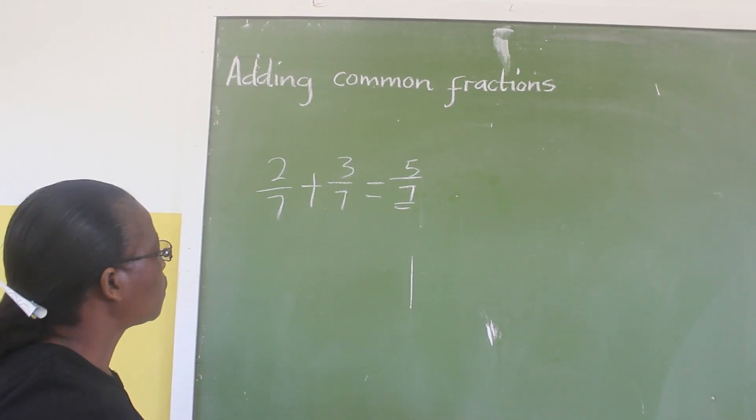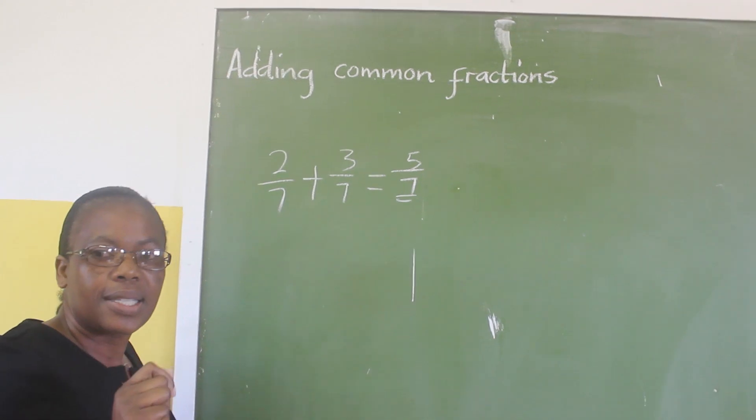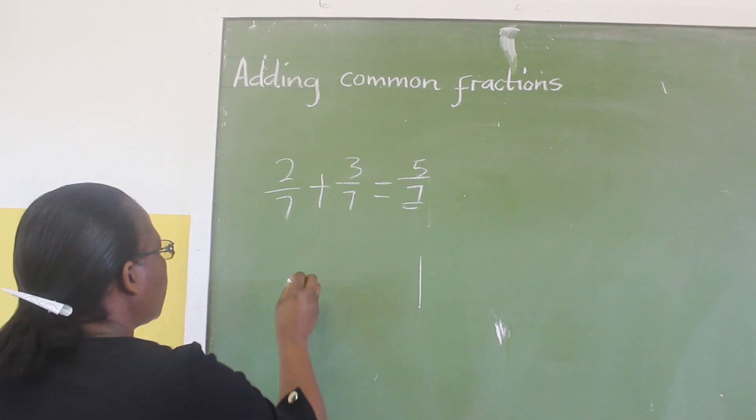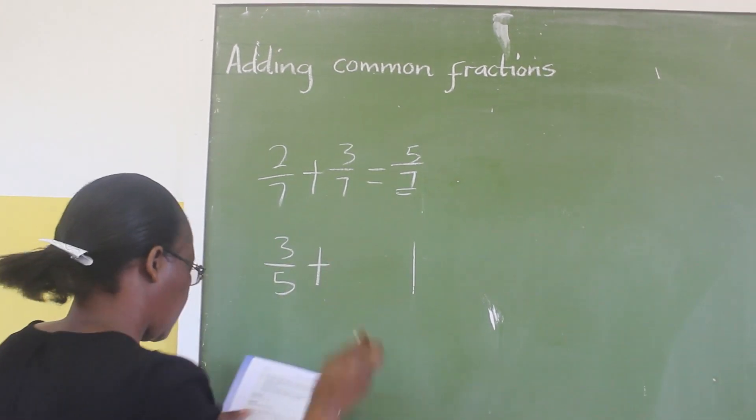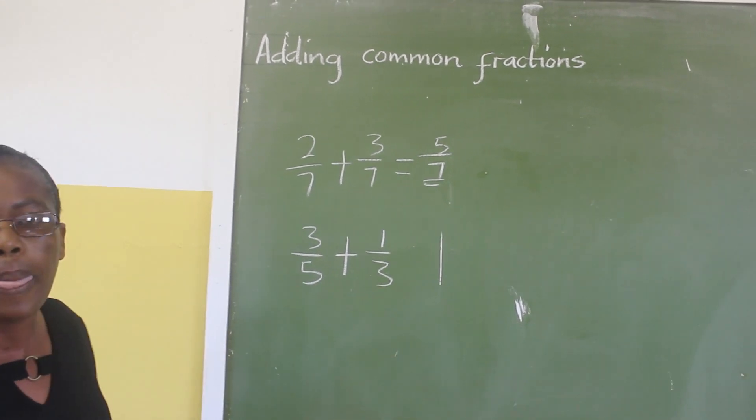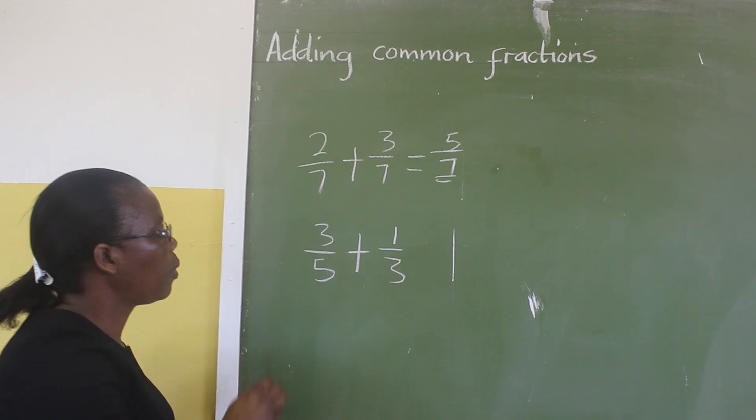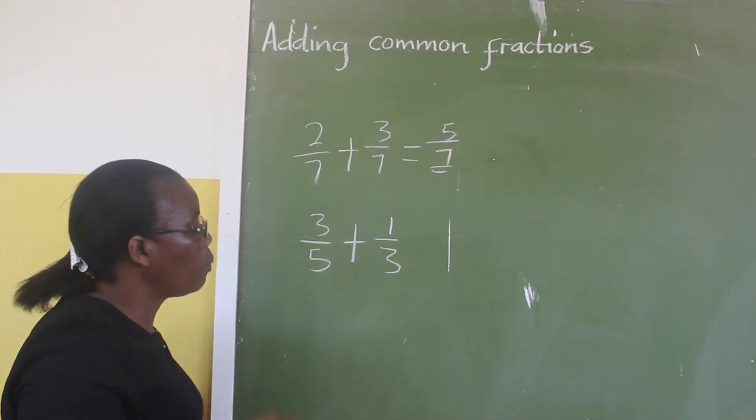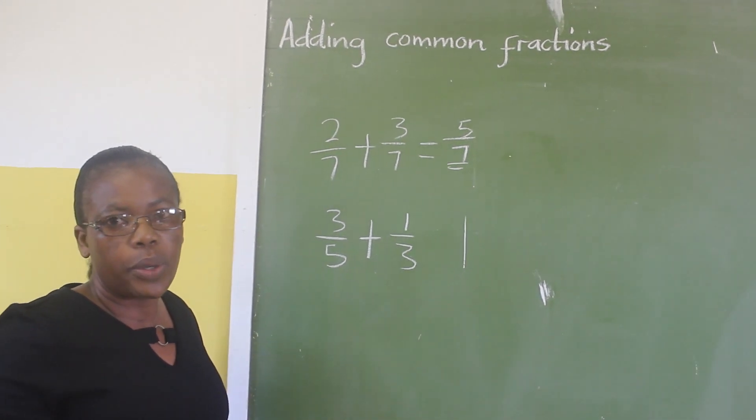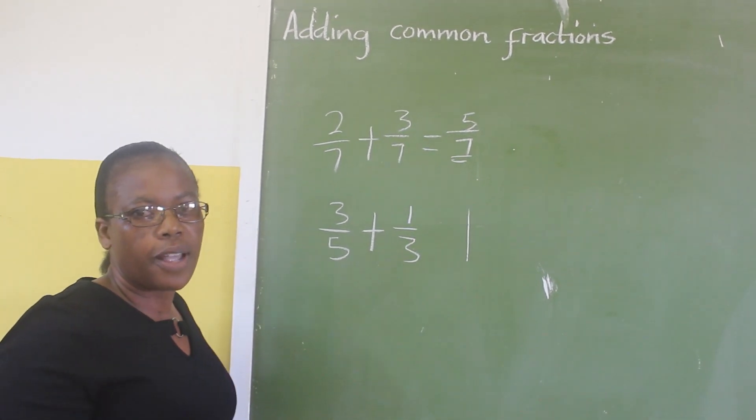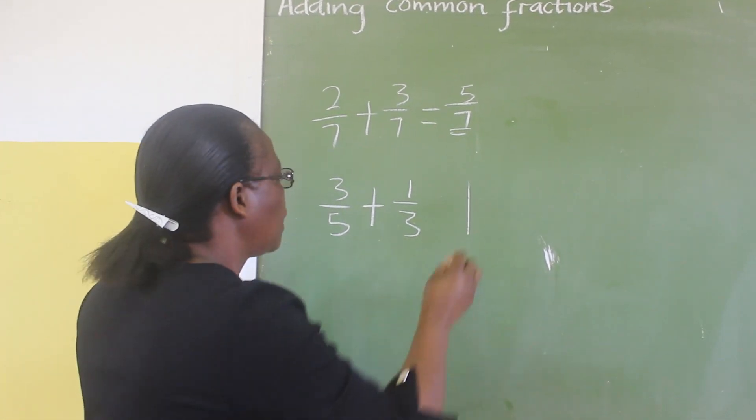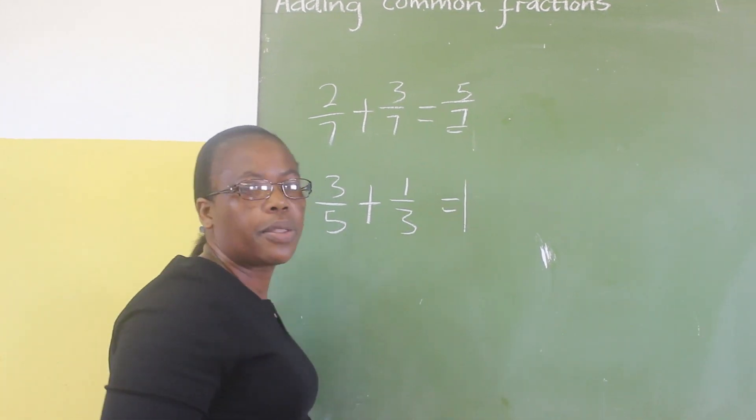The problem comes when the denominators are different. For example, you are given 3 over 5 plus 1 over 3. Before you do this, you find the lowest common multiple of 5 and 3. The lowest common multiple of 5 and 3, which is 15. So you do this. I want you to use the method that is in the textbook.